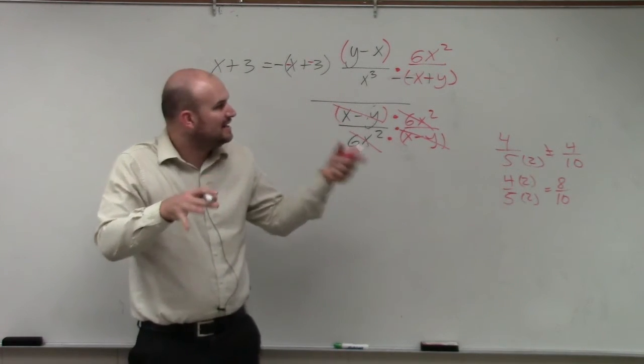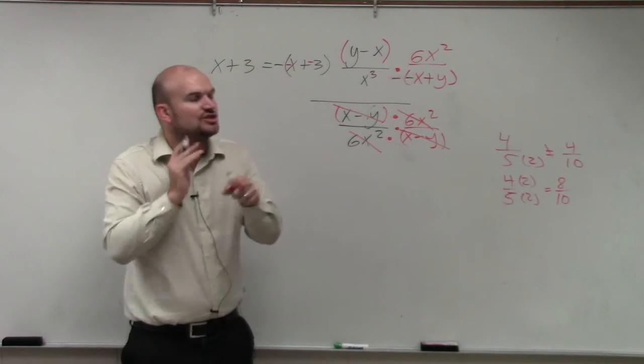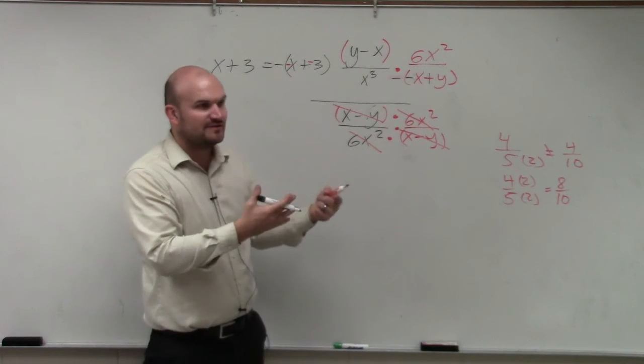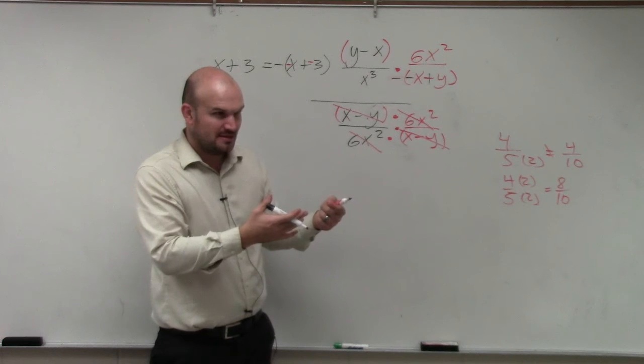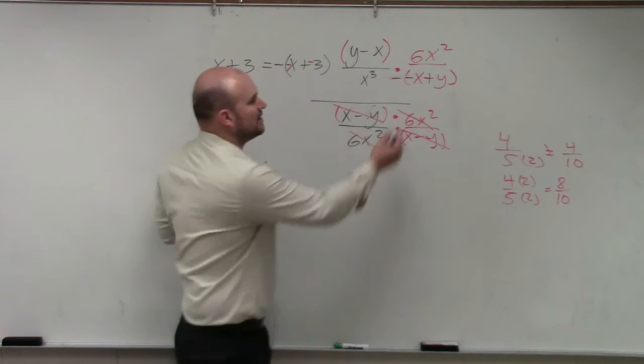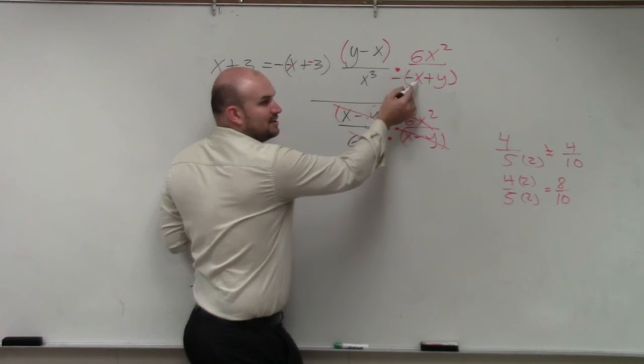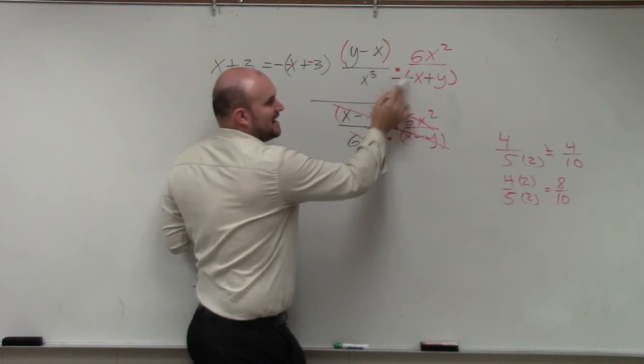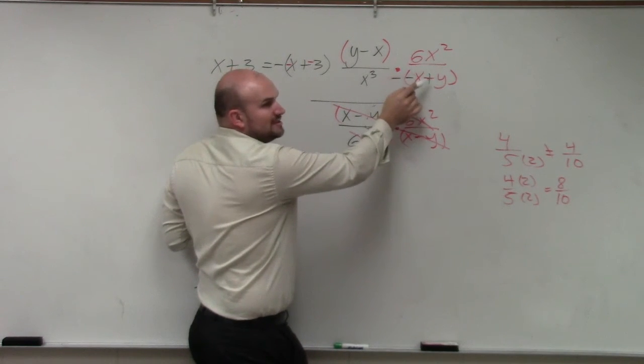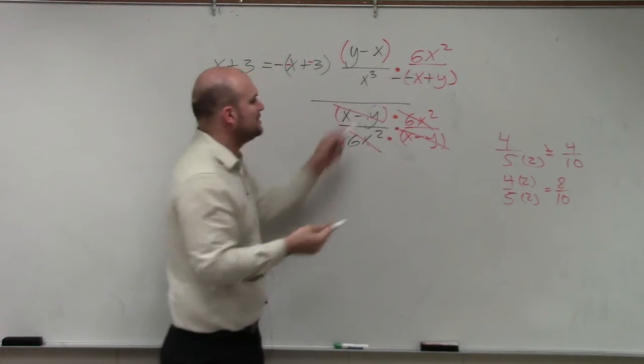It's the same thing. So factoring is not changing the value. It's just rewriting it in a different format. Does that make sense? So since I factor out the negative, notice negative times negative x is still equal to positive x. Negative times positive y is still equal to negative y. So I didn't change the value.